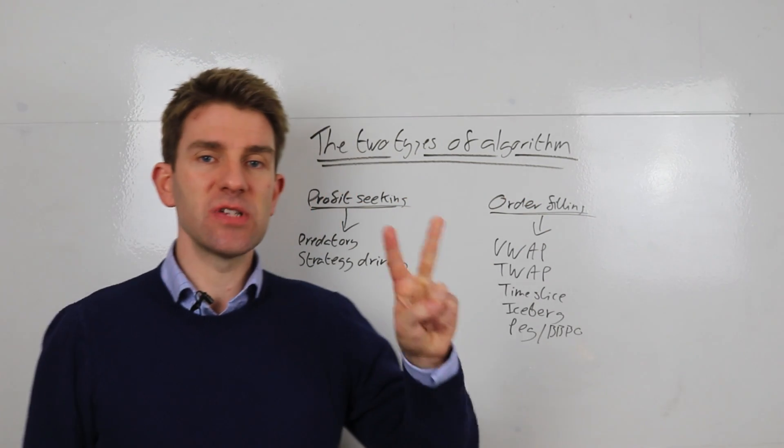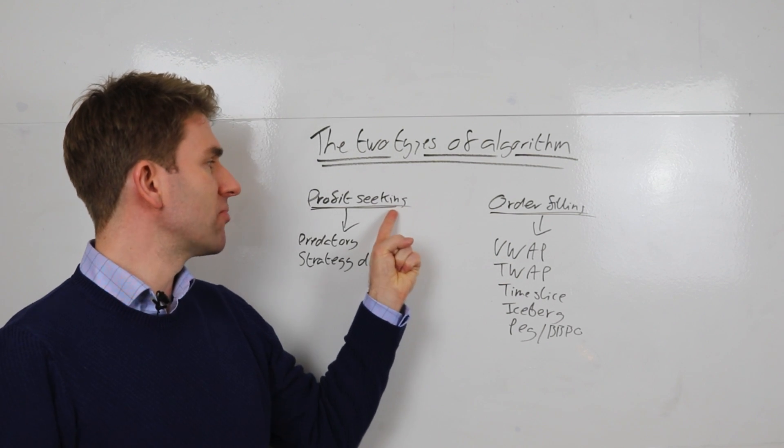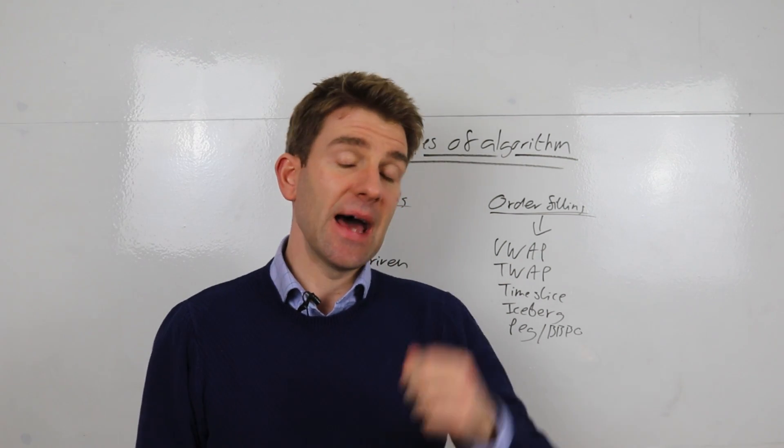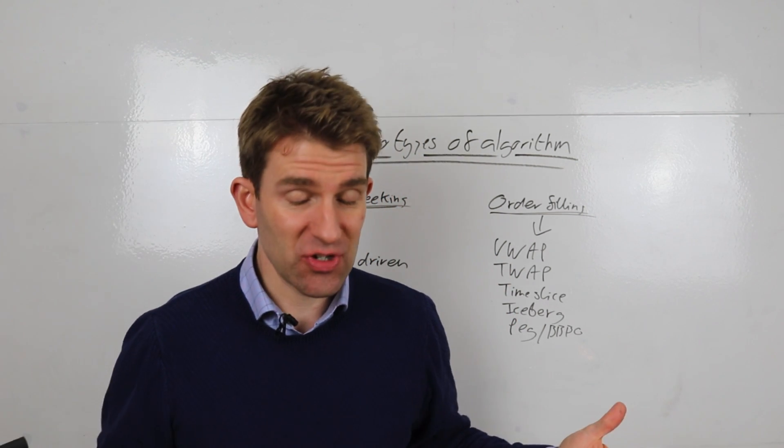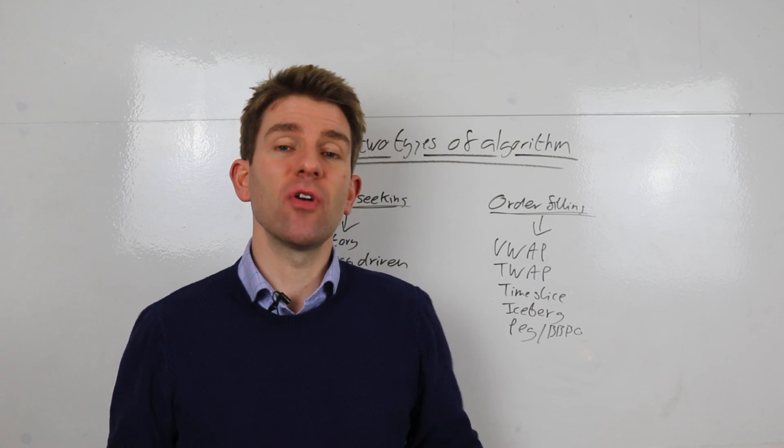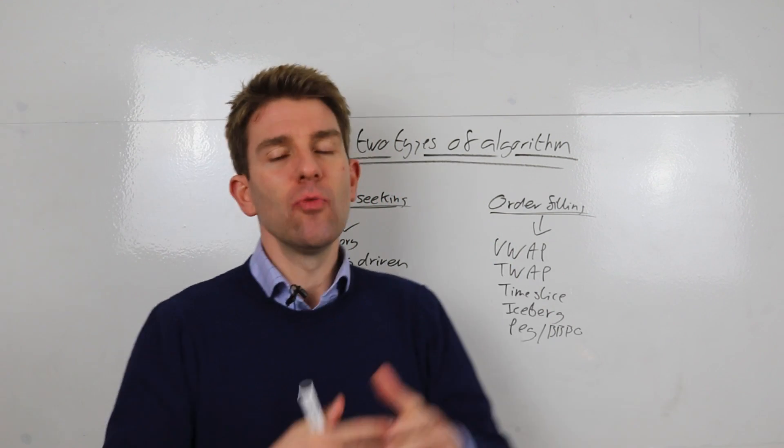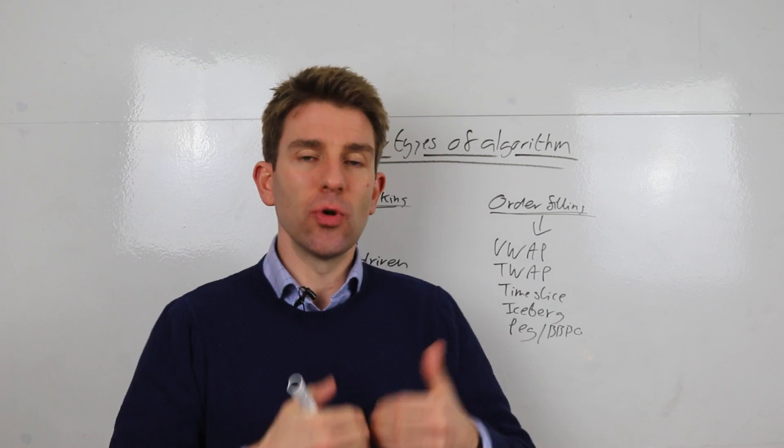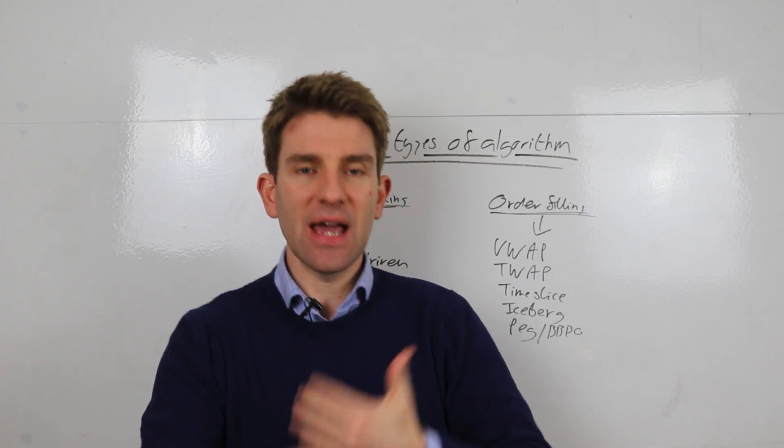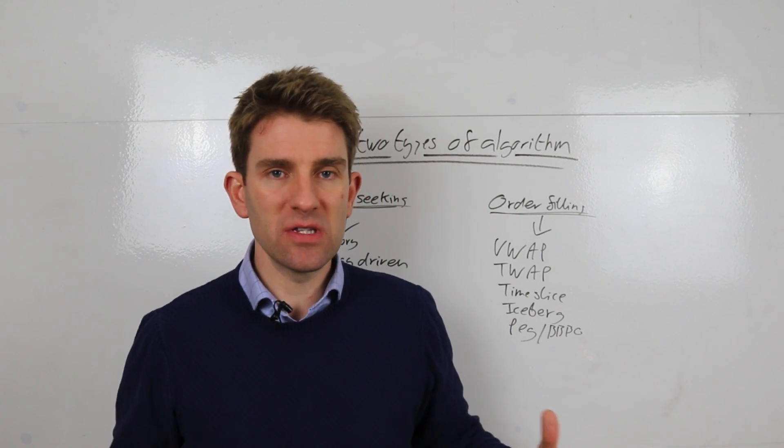Now, there are two broad types of algos out there. The first one is a profit-seeking algo. A profit-seeking algo is pretty much self-explanatory—what it's trying to do is make profit from its execution.